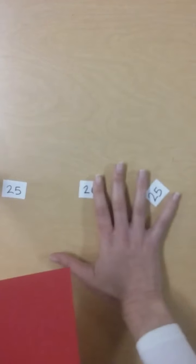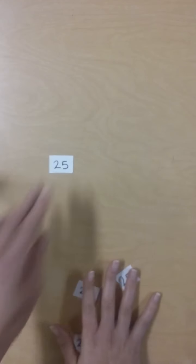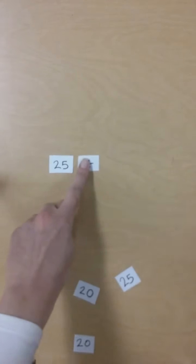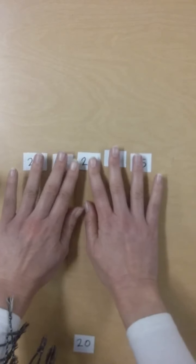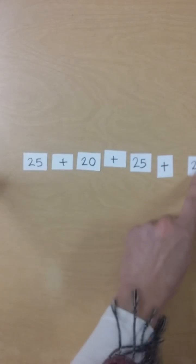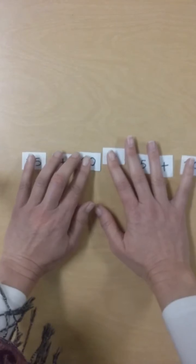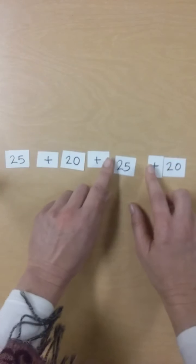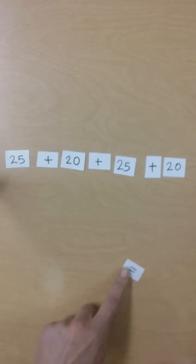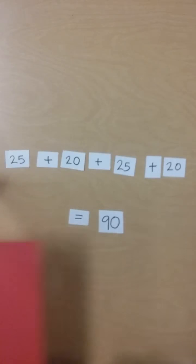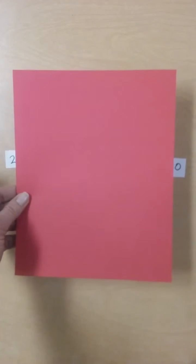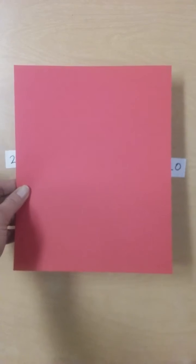So that would be 25 plus 20 plus 25 plus 20. And of course, when we're adding, we can add in any order. It doesn't matter the order of the numbers. When I add all of this up, it equals 90. So the perimeter of this object or this figure is 90 units or 90 centimeters.